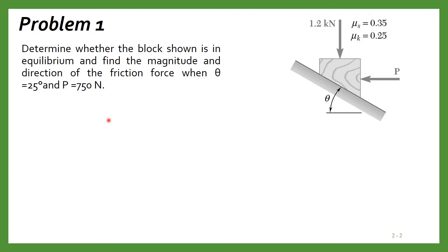This is the first problem related to friction. The problem is: determine whether the block shown is in equilibrium and find the magnitude and direction of the friction force. We have to find out whether this block is in equilibrium and find the magnitude and direction of the friction force when angle theta is equal to 25 degrees and the applied force is equal to 725 Newton.